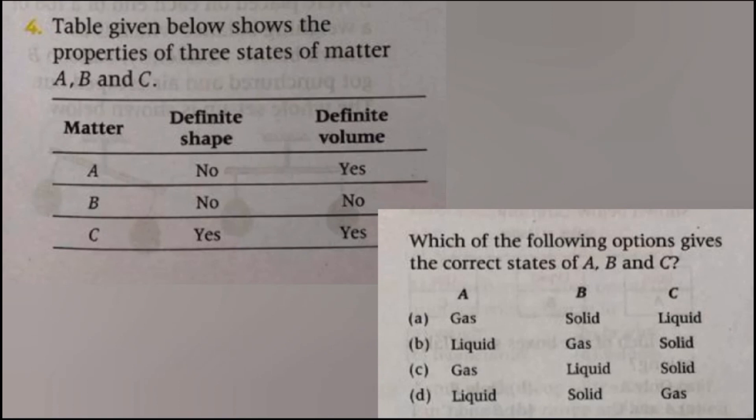The table given below shows the properties of three states of matter A, B, C. The answer is B: A represents liquid, B represents gas, and C represents solid.